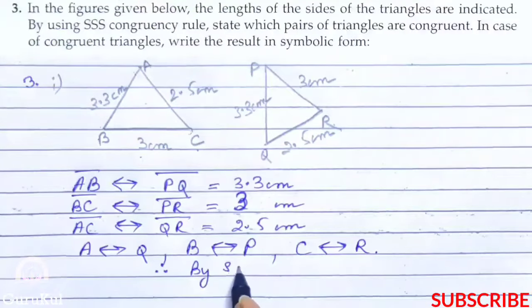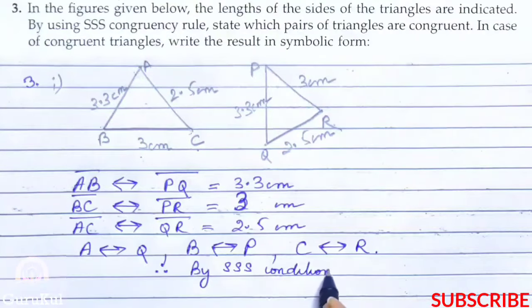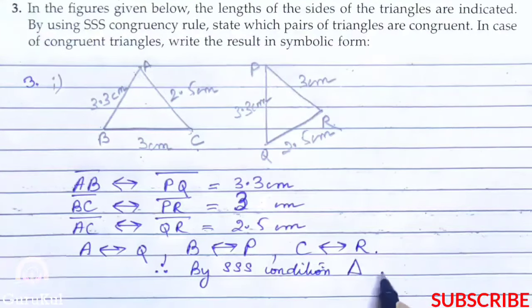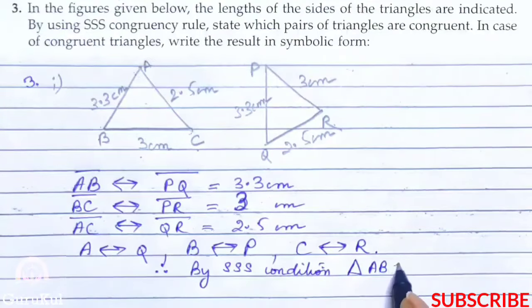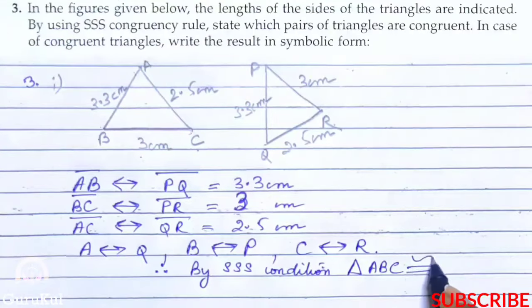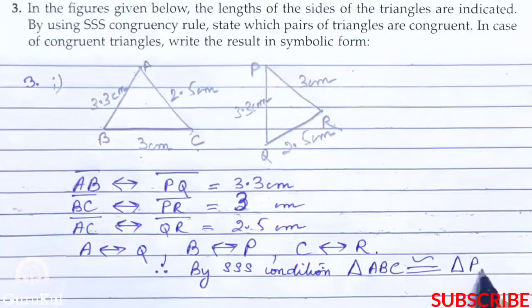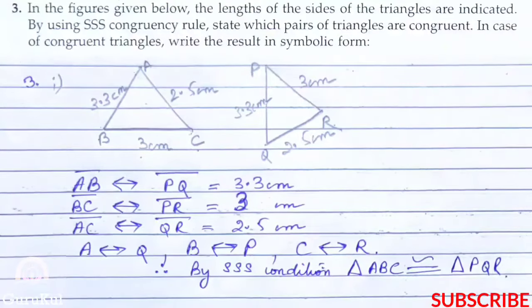Therefore, by SSS condition, triangle ABC is congruent to triangle PQR.